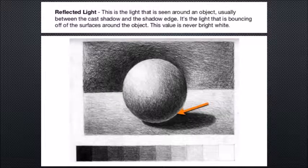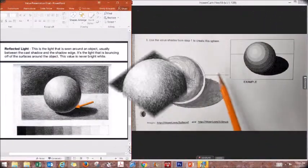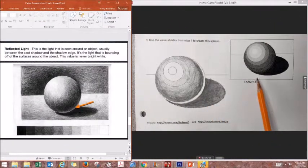Before we complete the sphere, we are actually going to go back to the bottom edge of our sphere to create our reflected light. This is the light that is seen around the object between the cast shadow and the shadow edge. It is a little bit of light that is bouncing off of the surface or the table and reflecting onto the object.